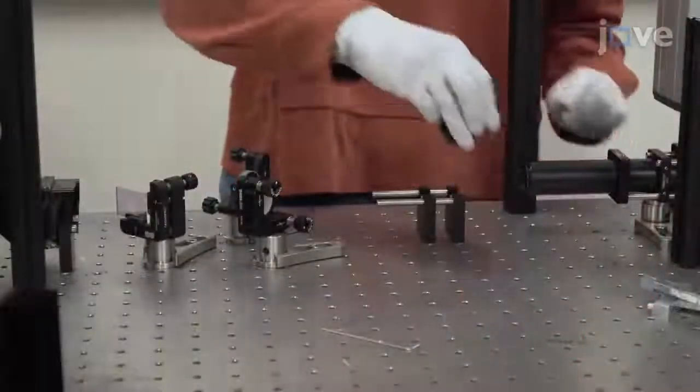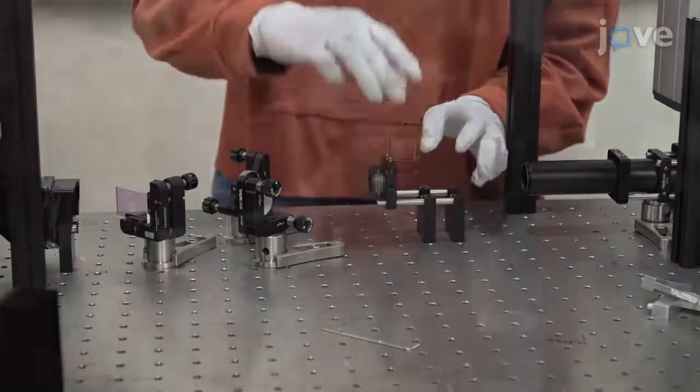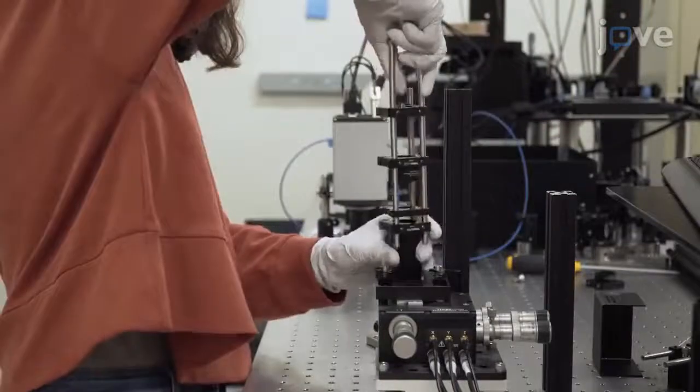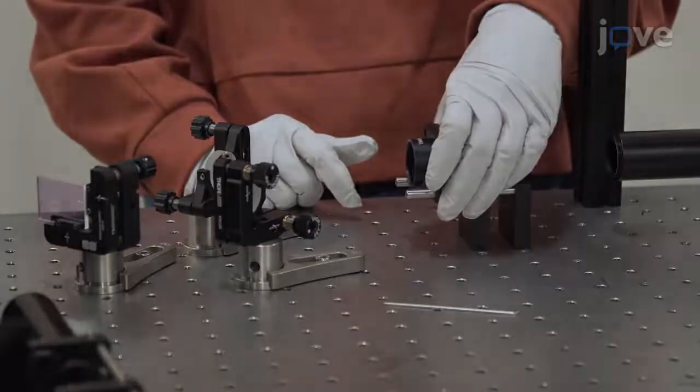Next, insert a 300mm focal length tube lens about a focal length from the camera. Remove the collimated light source from the microscope body. Then adjust the position of the tube lens in order to set its focal plane. Stop the adjustments when the camera...